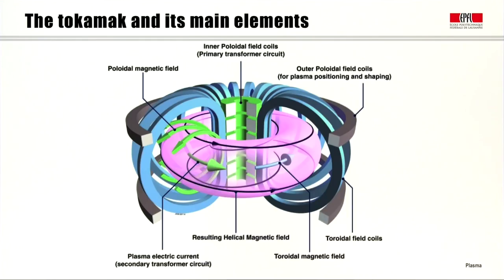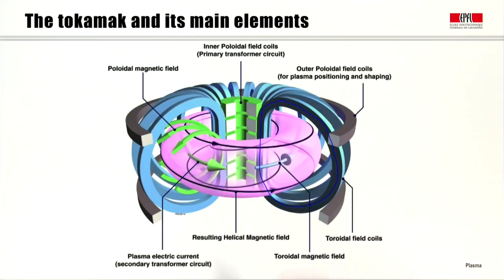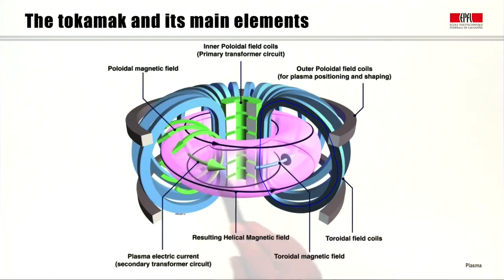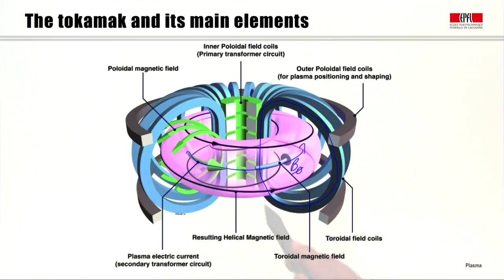In this drawing here, we see a sketch of the tokamak and its main elements. The first element is the toroidal field coil. As its name indicates, the toroidal field coils produce the toroidal field that goes in the toroidal direction. There is a current that flows in the coil, so the field is along the toroidal angle.